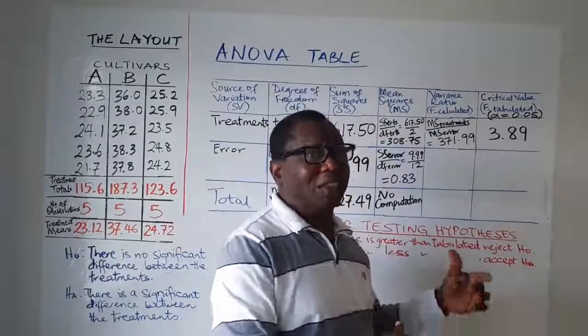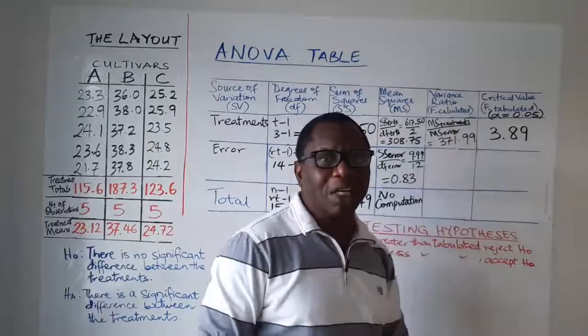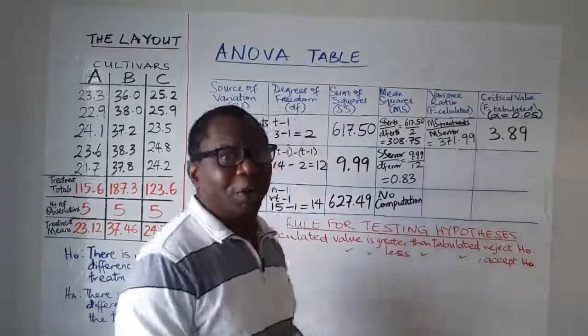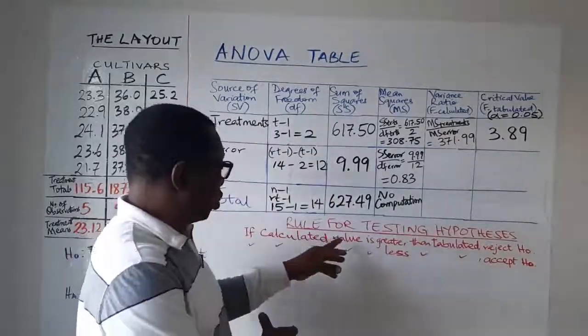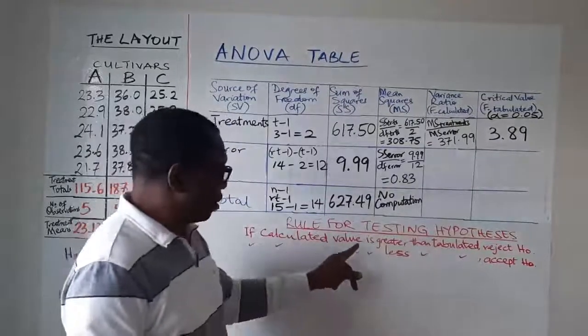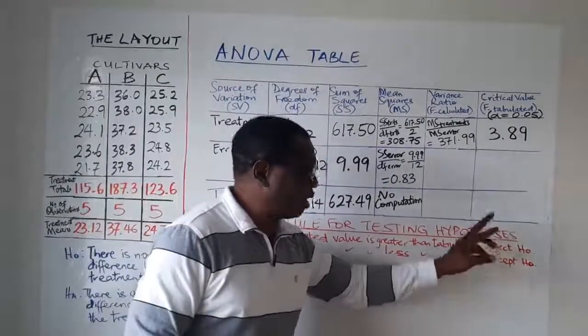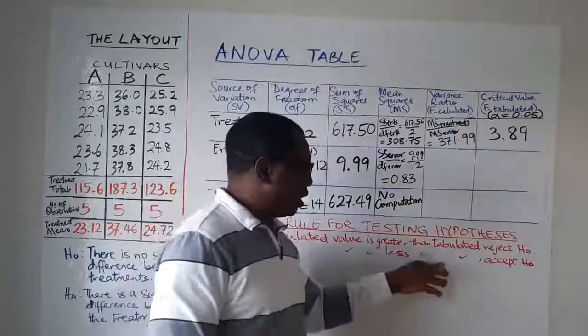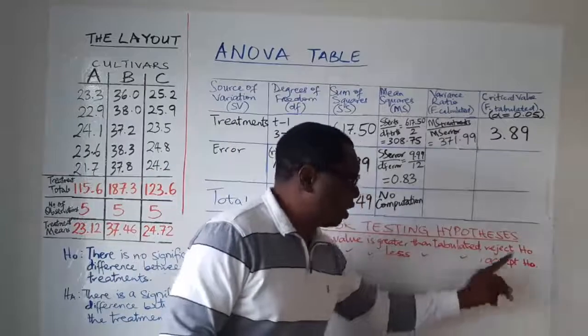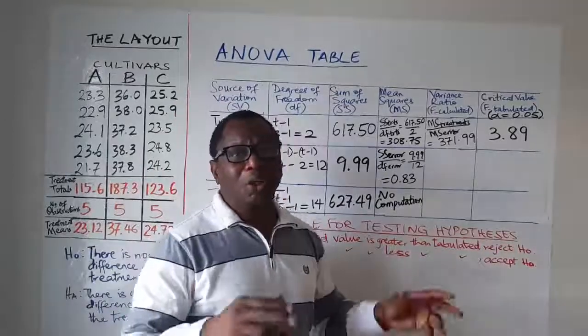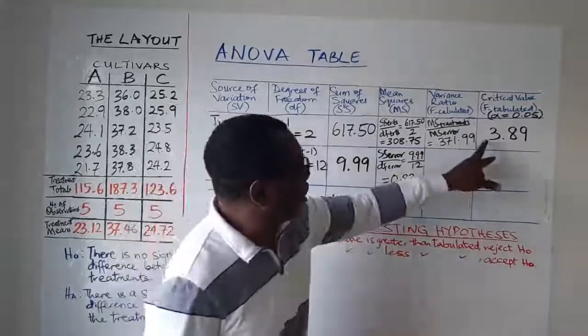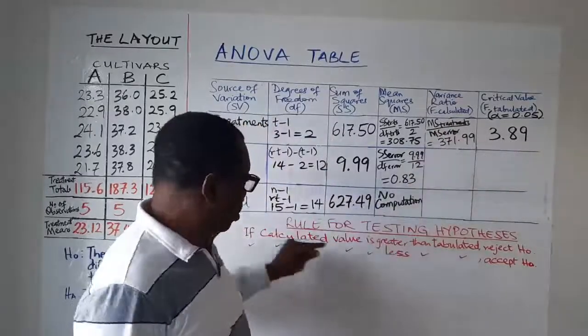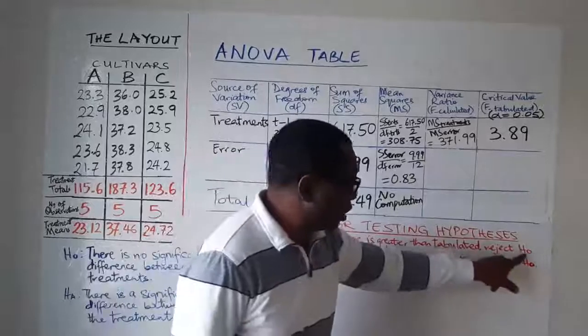And from previous video on testing of hypotheses, we have this rule, rule for testing hypotheses. If calculated value is greater than tabulated value, reject null hypothesis. On the other hand, if calculated value is less than the tabulated value, accept the null hypothesis. So the particular scenario that applies in our own case here, where the calculated value is greater than the tabulated value is this first one here. And therefore we reject H0.